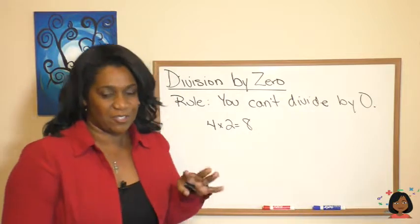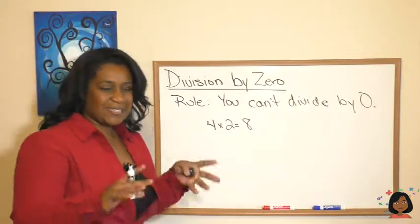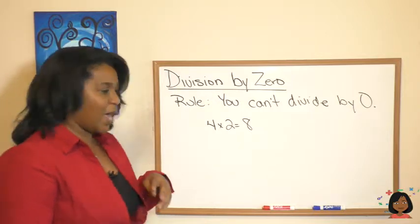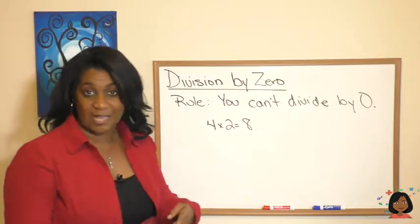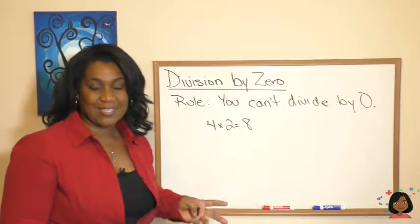Zero cannot be the divisor in a division problem. Let's take a look at some division problems to kind of see why. Let's start with this multiplication fact: four times two equals eight.